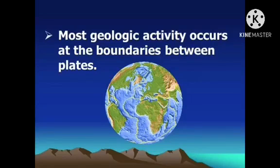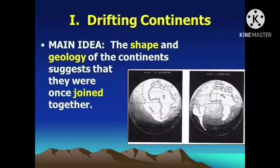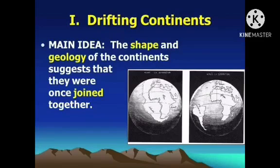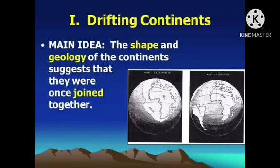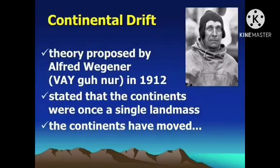So what exactly is the theory of plate tectonics and how was it developed? The theory of continental drift was developed over time due to the combined efforts of many pioneering scientists. It had to battle against many criticisms but ultimately became one of the great milestones in our understanding of the Earth's surface. According to this theory, the positions of the continents on the Earth's surface have changed over time.